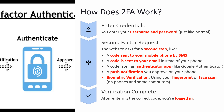How does two-factor authentication work? First, you enter your credentials, which is your username and password. Then the website asks for a second step, like a code sent to your mobile phone by SMS, a code sent to your email, a code from an authenticator app like Google Authenticator, a push notification you approve on your phone, or biometric verification using your fingerprint or face scan. After entering the correct code, you are logged in.